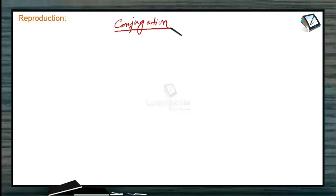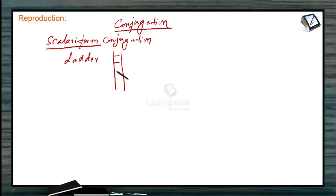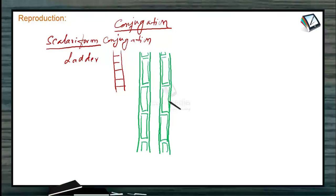Now we see the sexual methods. The sexual method is by a process called conjugation. In conjugation, two cells participate. Whether it is scalariform conjugation or lateral conjugation, two cells should participate in the sexual reproduction. In scalariform conjugation — scalariform meaning ladder — two filaments participate. Two filaments lie parallel to each other and one cell corresponds to the cell of the other filament.